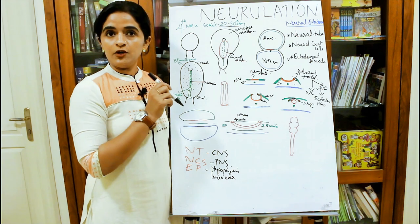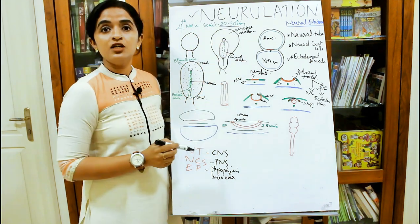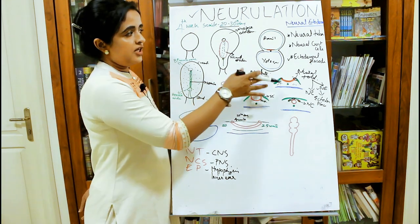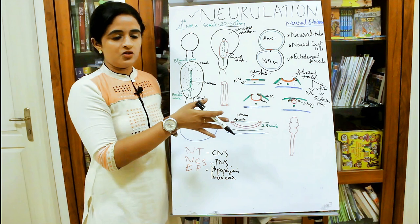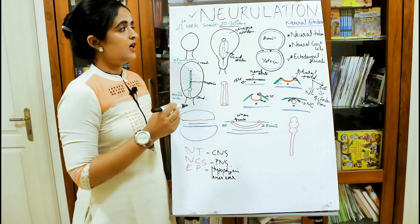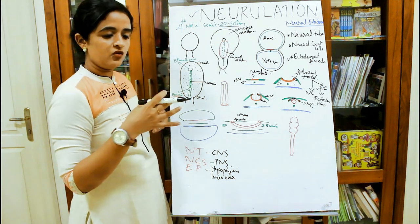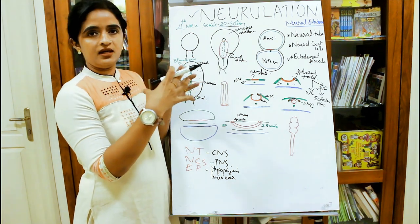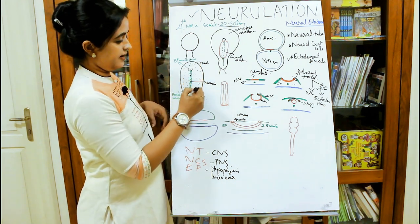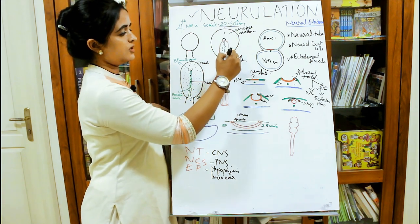After neural tube formation, the surface ectoderm has fused together, the endoderm remains as is, the notochord lies in the midline, and the neural tube — formed from the neural plate — lies just above the notochord. Neural crest cells are detached on either side, and neuroepithelial cells remain as ectodermal placodes. This entire process is called neurulation. Now let's view this in sagittal section.